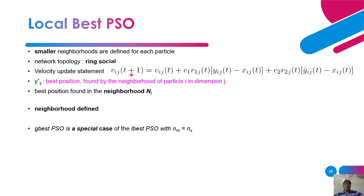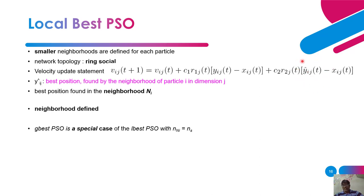The velocity update equation for L-best PSO is almost the same — the only difference is in the social term. V_ij(t+1) = V_ij(t) + c1·r1_j(t)·(y_ij(t) − x_ij(t)) + c2·r2_j(t)·(ŷ_ij(t) − x_ij(t)). Here ŷ_ij(t) is the best position found by the neighborhood N_i of particle i in dimension j — that is the key difference between local and global best PSO.